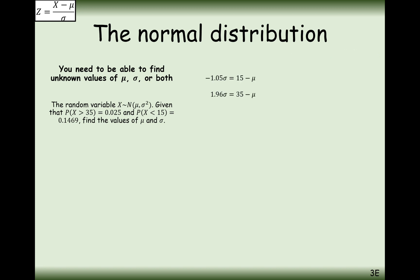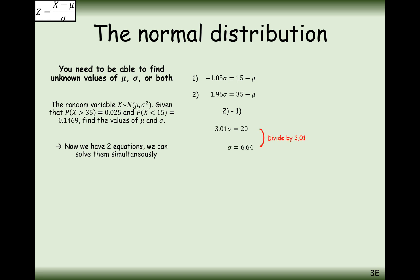Now solve the two simultaneous equations. You might subtract equation 1 from equation 2, or make the mu terms equivalent and set the results equal. Either way, you get the standard deviation equal to 6.64 and the mean equal to 22.0.